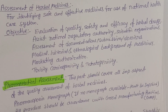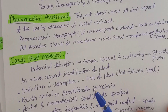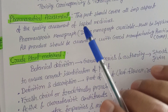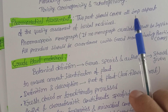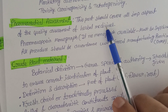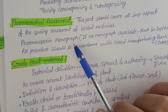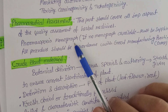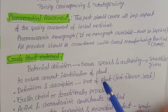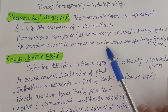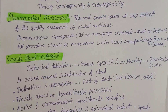For pharmaceutical assessment per WHO guidelines, this part should cover all important aspects of quality assessment of herbal medicine. Pharmacopoeial monographs — such as the British Herbal Pharmacopoeia and British Herbal Pharmacodex — should be referenced. If no monograph is available, it must be supplied by the relevant authority. All procedures should be in accordance with Good Manufacturing Practice (GMP).